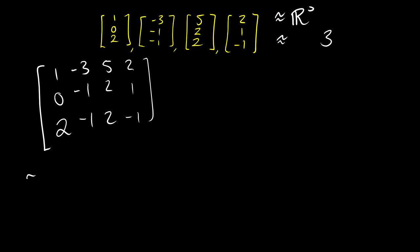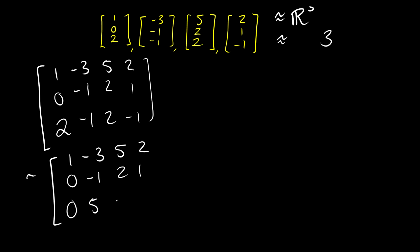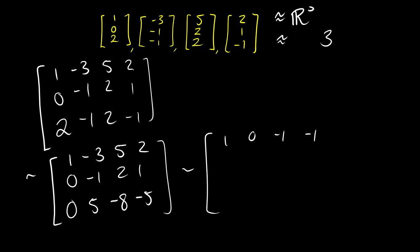We'll subtract 2 times the first row from the third row: 2 minus 2 is 0, negative 1 minus negative 6 is 5, 2 minus 10 is negative 8, negative 1 minus 4 is negative 5. Then subtract 3 times the second row from the first: 1, 0, negative 1, negative 1. We also get 0, negative 1, 2, 1.